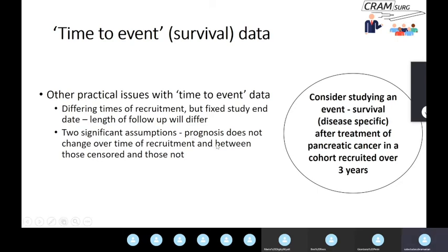The other big assumption is that patients who are censored are very similar — primarily in terms of prognosis — to patients who are not censored. Censoring can happen for all sorts of reasons related or unrelated to the cancer, and those reasons or confounding variables might themselves affect prognosis. That's a significant assumption you need to bear in mind.